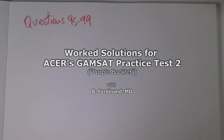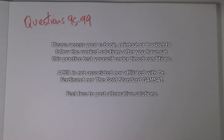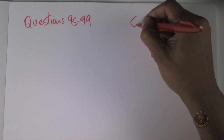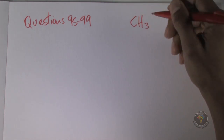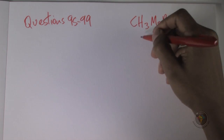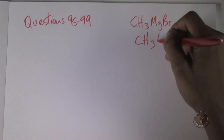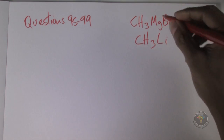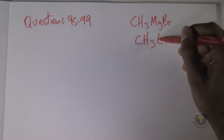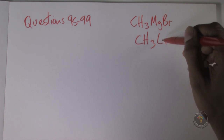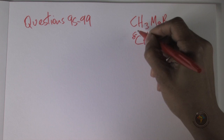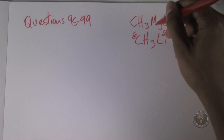Questions 95 to 99 cover Grignard reagents. As soon as you hear Grignard reagents, think MgBr. Grignard reagents and alkyl lithiums do the same thing: they generate delta-negative carbons. Lithium is in the first group of the periodic table, more to the left than carbon, so it's more electropositive than carbon, making carbon electronegative.